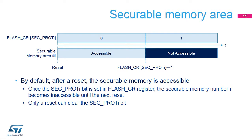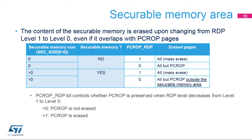In the case of secure boot, used to perform image authentication and decryption, the SecProt_i bit is set to 1 when authentication is successful, just before branching to the first instruction of the image. Once the SecProt_i bit is set, it cannot be cleared by software — the only way to clear it is to apply a reset. Code in the securable memory may also decide to erase part of the securable memory. Changing the flash read protection from level 1 to level 0 triggers erasure of the securable memory. Code in the securable areas can also be protected against read and write access by mapping it into PCROP areas. Changing RDP from level 1 to level 0 will erase these PCROP areas regardless of the PCROP_RDP bit value. Only the contents of PCROP areas outside the securable memory address range will be preserved.